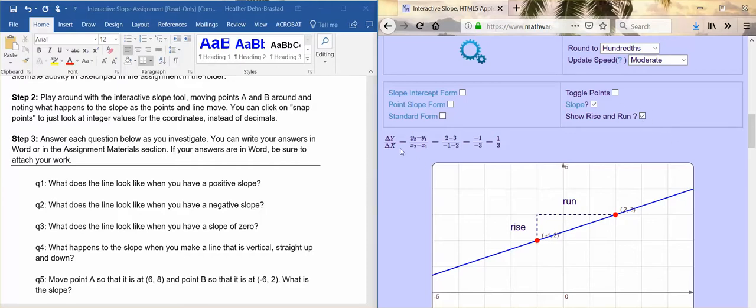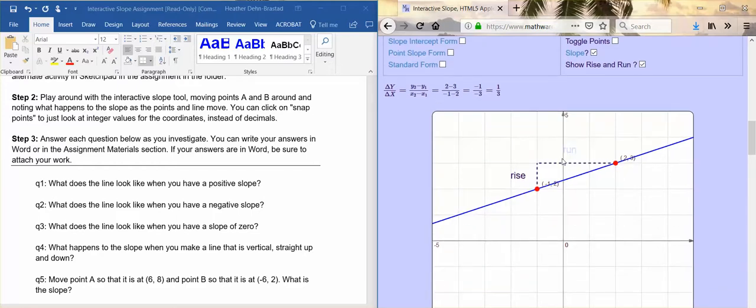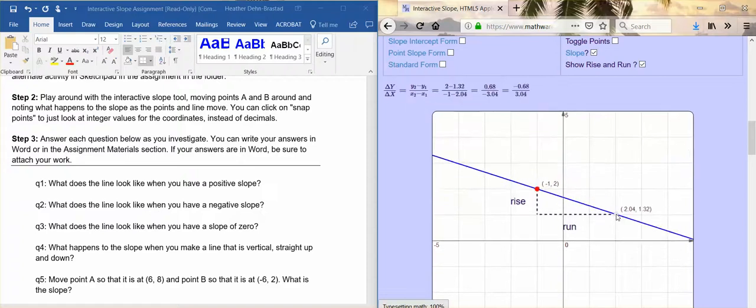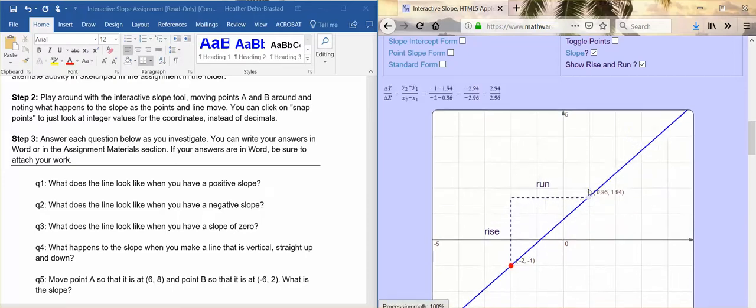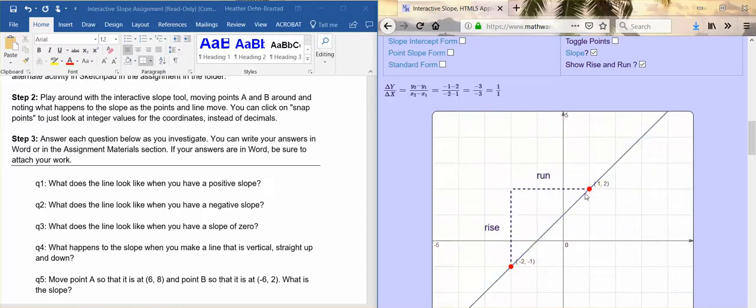Here is the slope formula that we will be learning about this week. Don't worry too much about it now, but what we're going to do is just practice moving the points around and seeing how the slope changes. This last calculation here is the slope of this line, so you can see that sometimes it's negative, sometimes it's positive, sometimes it's a fraction. A lot of times it's a fraction, sometimes this would simplify to one, so sometimes it's an integer answer.